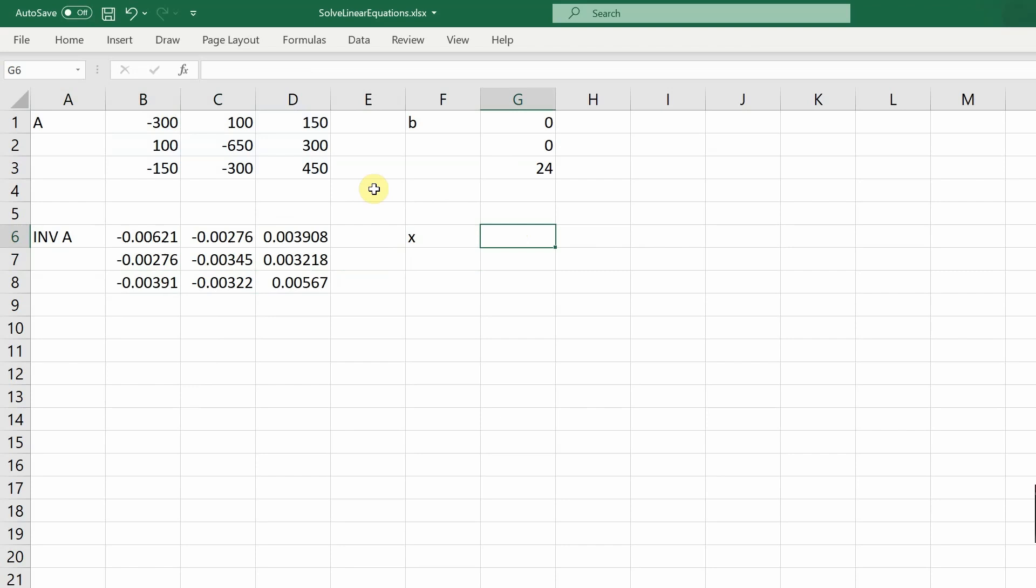Now, in order to get x, x is equal to the inverse of A times the B matrix. So all I need to do is multiply those two together. And it's not a normal multiplication. It's a matrix multiplication. So I'm going to call it mmult. And you can see here that it's going to multiply array one by array two. Array one is the inverse A matrix. So I need to use from B6 to D8. That's matrix one. And matrix two is G1 to G3. So I'm going to multiply those two matrices together. And that will give me the x. And there are my values for x. And in this case, remember, these are actually the currents. So current one is 93.8 milliamps. Current two is 77.2 milliamps. And current three is 136 milliamps. And that's all you need to do in Excel to solve a set of linear equations.